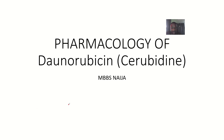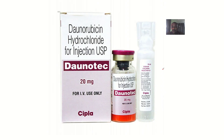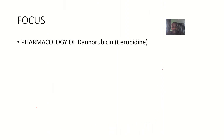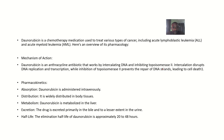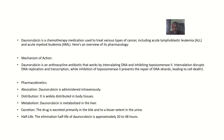The next drug of choice we'll be looking at is daunorubicin, also known by its brand name cerubidine. Daunorubicin is a drug used in treating different types of cancers, and we'll be covering its mechanism of action, pharmacokinetics, clinical uses, and adverse effects.